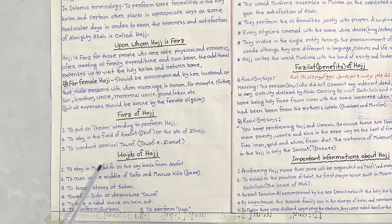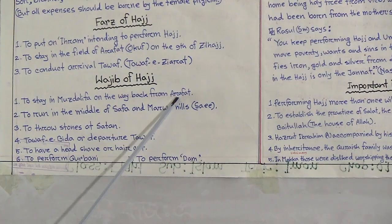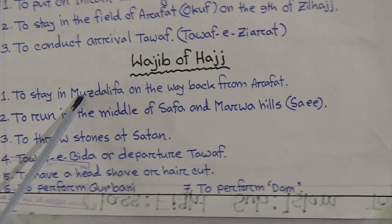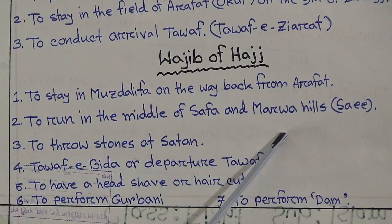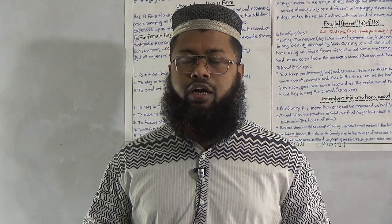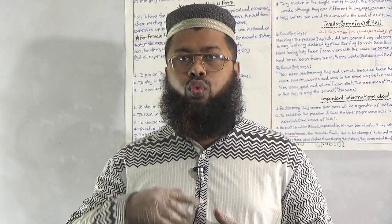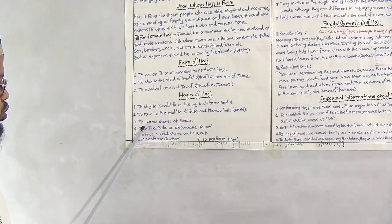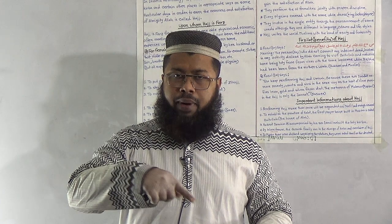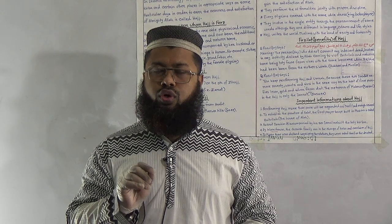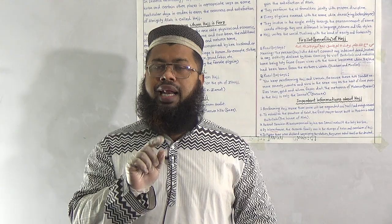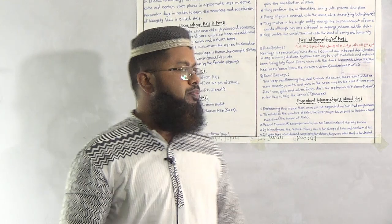Now I will discuss the wajib acts of Hajj. First, to stay in Muzdalifa on the way back from Arafat. Second, to perform Sa'i — running between the Safa and Marwa hills. Sa'i means walking very fast from Safa to Marwa. Third, to throw small stones at the pillar representing Shaytan — you imagine the pillar is like the devil and throw stones at it. Fourth is Tawaf-e-Wida, the farewell tawaf, which is for those coming from outside Makkah.